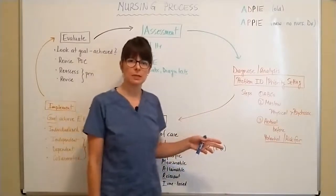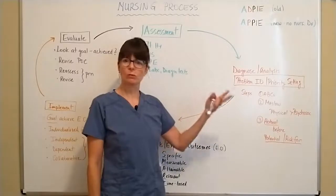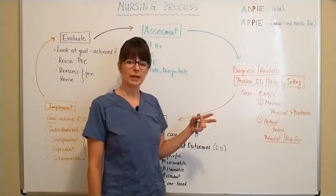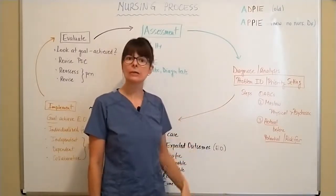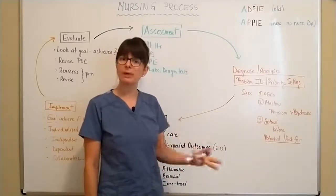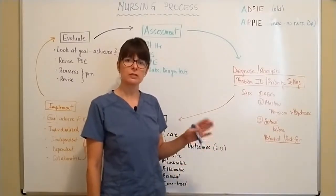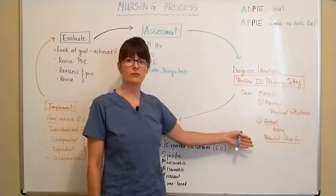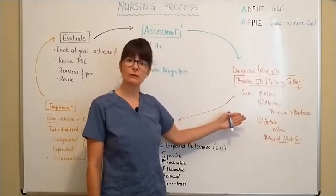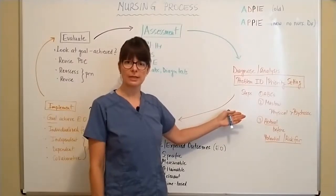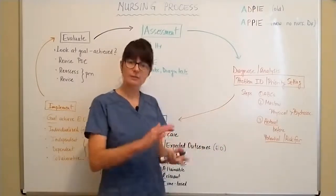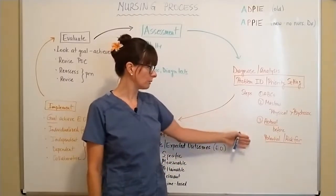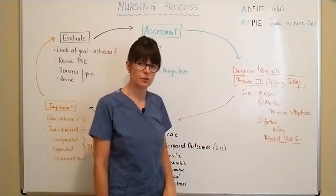Actually identified problems always come before potential ones, and this might change. For example, a patient admitted with an infection has an actual problem, while a patient admitted for a knee replacement would be at risk for infection but doesn't have an actual infection. Their priorities with the knee replacement would be different and would take higher priority over the risk for infection. Wound care and skin integrity would take priority because there is an actual break in the skin which could lead to infection.